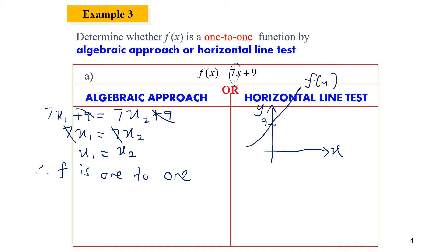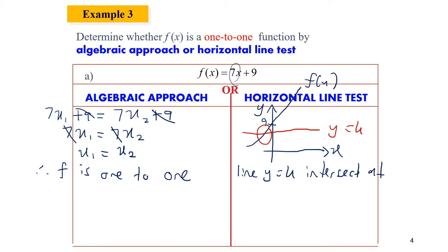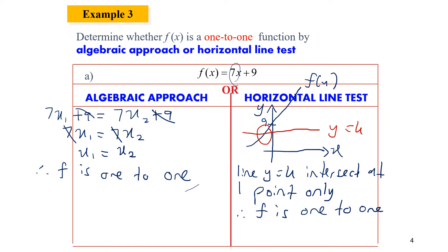Then we sketch the line y equals k. We circle the intersection, which is at one point only. The line y equals k intersects at one point only. Remember, one intersection point means f is one-to-one. We get the same conclusion as with the algebraic approach. So the conclusion is: for a linear function, it is a one-to-one function.